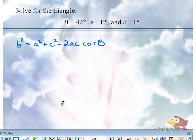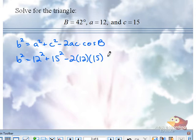And we'll round to the nearest whole number for the missing part. So since we're trying to solve for little b, put in 12 for a, put in 15 for c, and put in 42 degrees for B.